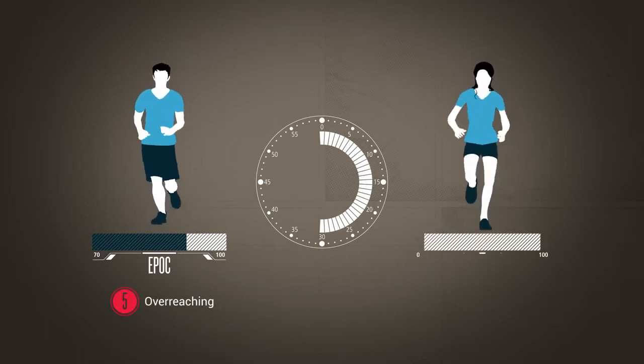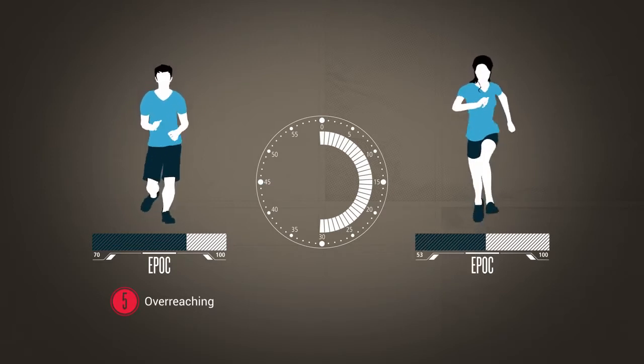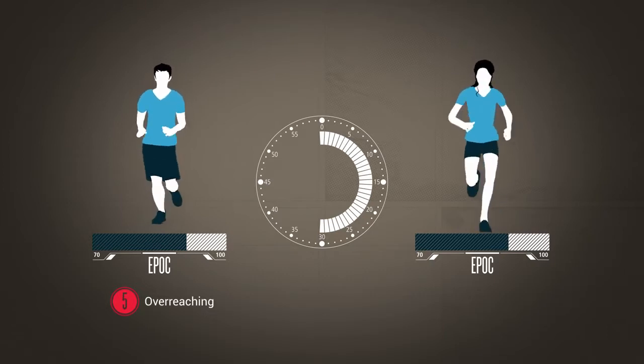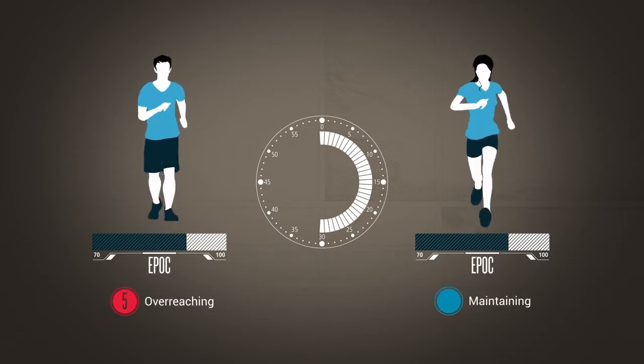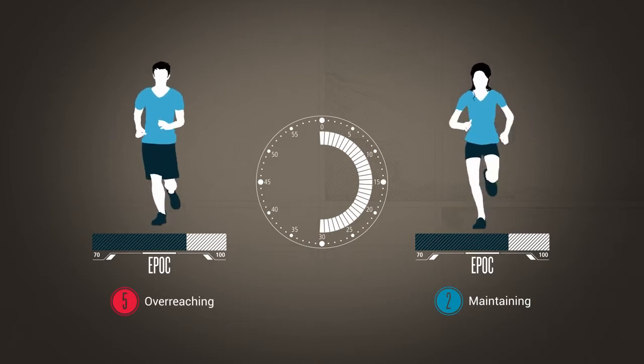However, an elite level runner could complete the same half-hour run at the same relative intensity while still producing an EPOC of about 70. This would result in a training effect of about 2, which is only maintaining for that athlete.